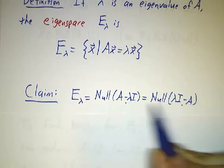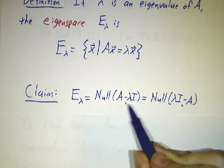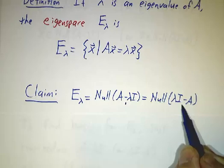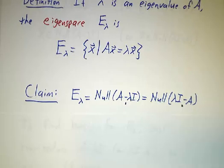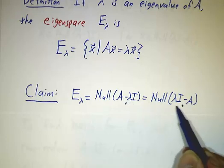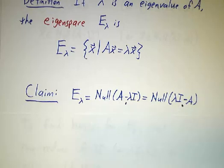This matrix and this matrix have the exact same null space, because they're just negatives of each other. Solving this times x equals 0 is the same thing as solving this times x equals 0. Some people prefer to work with A minus λ times the identity. Some people prefer to work with λ times the identity minus A. You get the same answers either way.